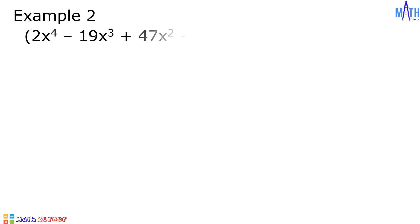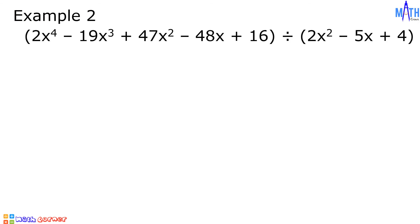Example number 2: we have 2x raised to the 4th minus 19x cubed plus 47x squared minus 48x plus 16, divided by 2x squared minus 5x plus 4. The dividend and the divisor are already expressed in standard form. Let us divide.